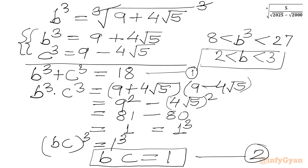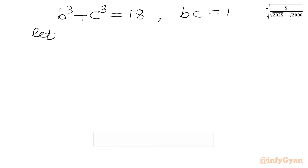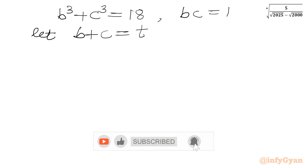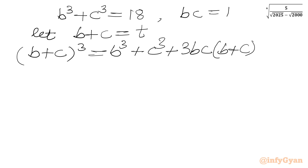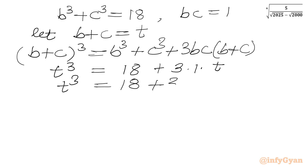Now we solve equations 1 and 2 for b. Let t equal b plus c. Using the identity (b plus c) cubed equals b cubed plus c cubed plus 3bc(b plus c), we substitute: t cubed equals 18 plus 3 times 1 times t. So t cubed equals 18 plus 3t, or equivalently t cubed minus 3t minus 18 equals 0.